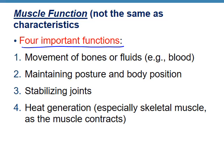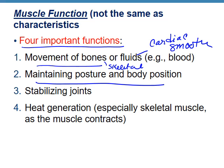There are four important muscle functions. Number one is movement of bones and fluid — bones correspond to skeletal muscle, fluid to cardiac and smooth. For maintaining posture and body position, think of all the muscles of your back from Chapter 10. Go back to Chapter 8 and look at the stabilizing effect that muscle tone has on joints. Last is heat generation — we saw this in Chapter 1 when we talked about shivering, contracting skeletal muscles to generate heat.